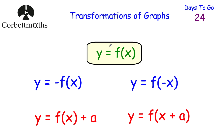Today we're looking at transformations of graphs. Here's part of the revision card. If you've got y equals f of x, there are four different transformations you need to know at GCSE level. They are: y equals minus f of x — a reflection in the x-axis; y equals f of minus x — a reflection in the y-axis; y equals f of x plus a, where plus a is outside the brackets — translates the graph a squares upwards, or subtracts a squares downwards; and y equals f of x plus a, where plus a is inside the brackets — counterintuitively translates it a squares to the left, and if subtracted, to the right.